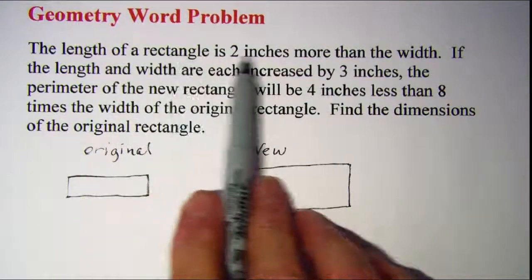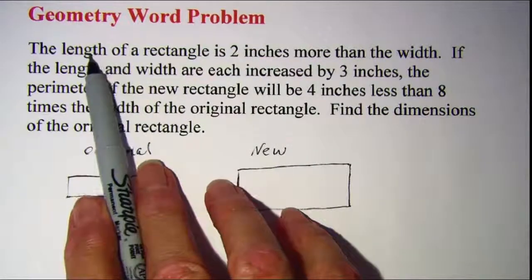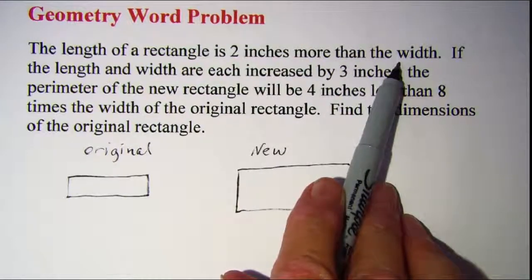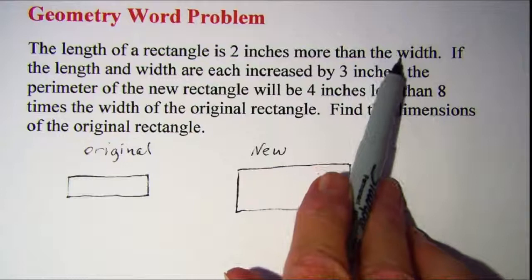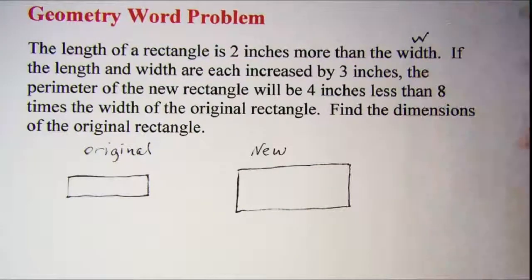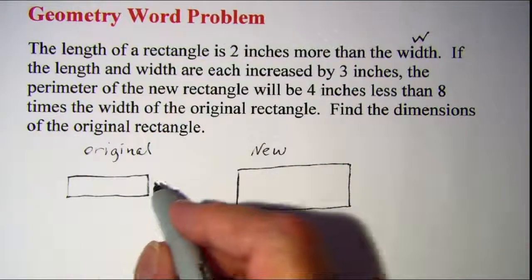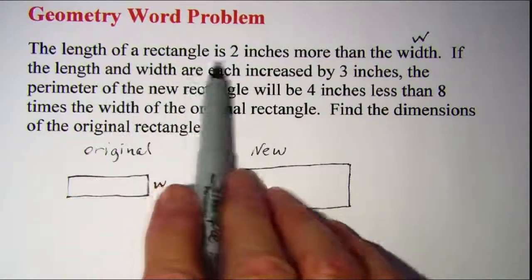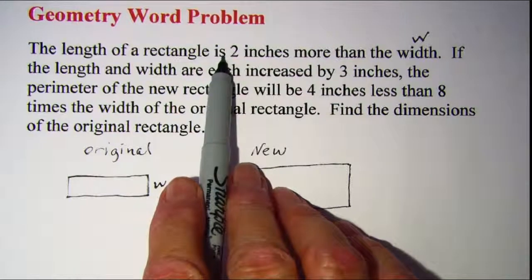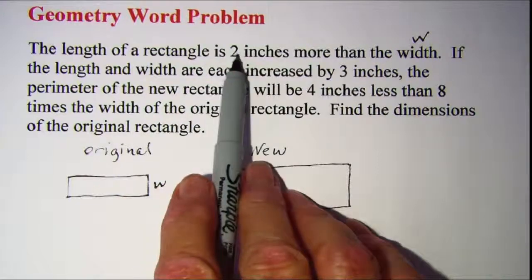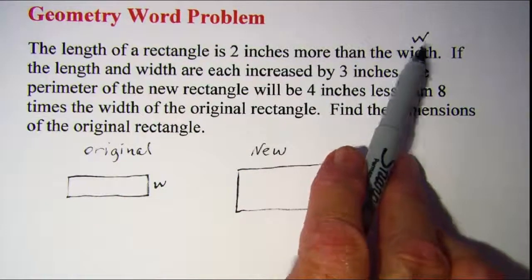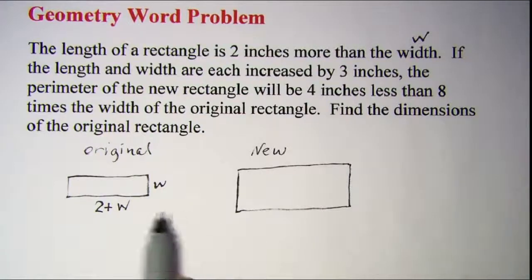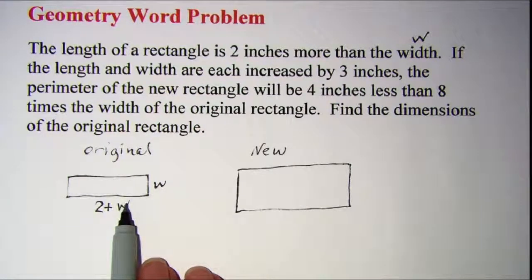For our given information, let's look at this first sentence. It says the length is two more than the width. So I would let my variable be the width and I'm going to let that be w. So my width I'm going to label as w, and then the sentence says the length is two more than w. So my length is 2 + w. So now I have my variables for my original rectangle.